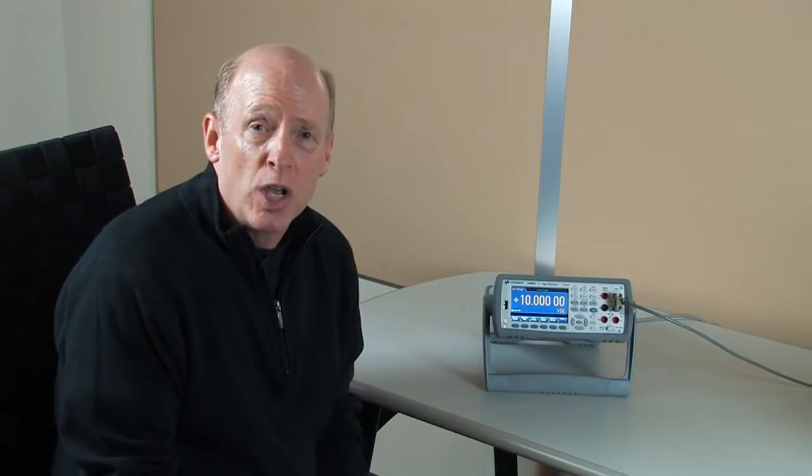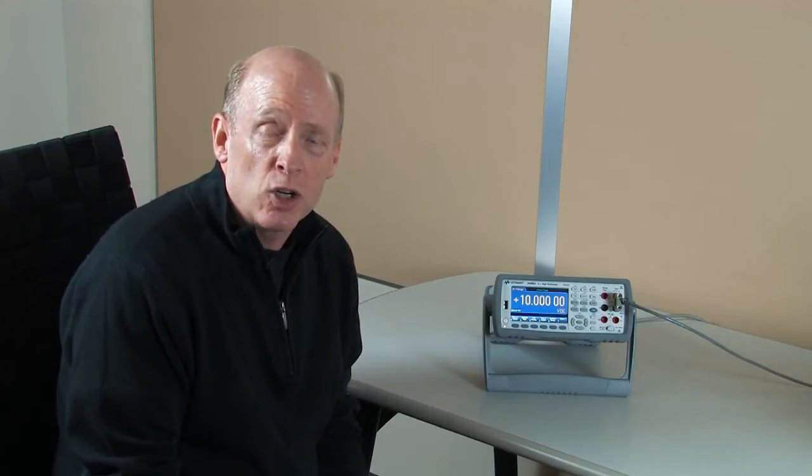Auto calibration enables the multimeter to internally compensate for accuracy and reading errors due to ambient and internal instrument temperature changes that occur over time.